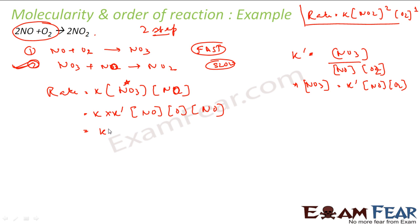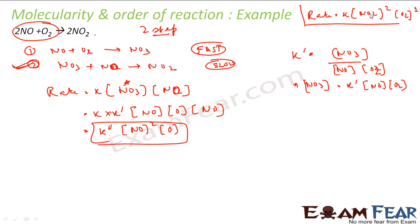Substituting: rate = k × K' [NO][O2] × [NO] = k'' [NO]^2 [O2]^1, where k'' is a new combined constant. This matches the experimental value exactly. So using molecularity we can find the rate law if we know all the steps for a given reaction.